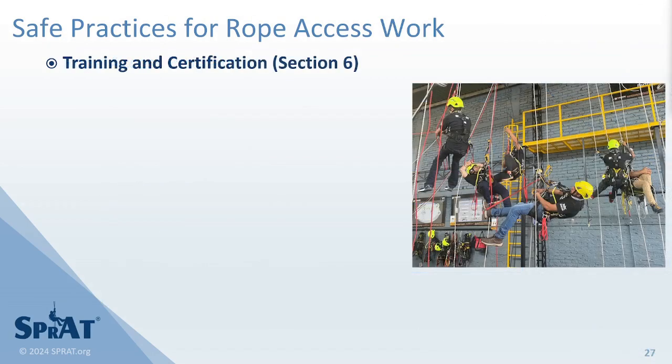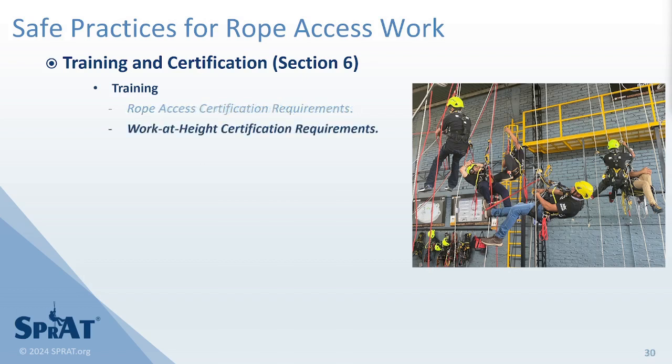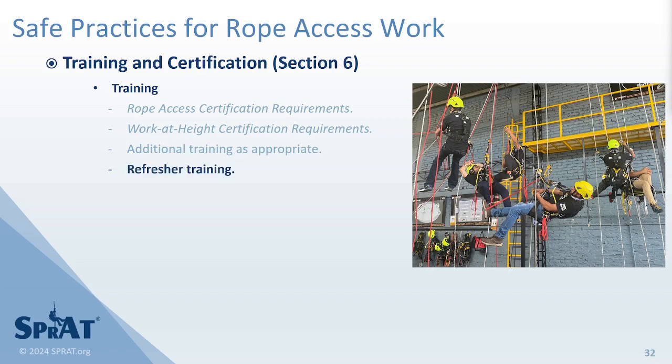Training must be provided to all work team members and prospective personnel at a minimum, and in a manner consistent with SPRAT's rope access certification requirements and work at height certification requirements. Additional training for specific work methods and work environments must be provided as required by the access work plan, client, or the presiding regulatory authority. Refresher training should be provided on an annual basis, as well as for work team members that demonstrate inadequate retention from training or who have not been engaged in rope access work for six months or more.